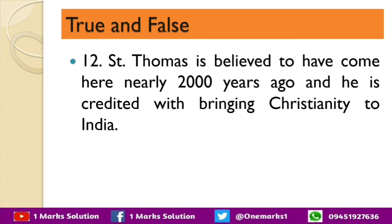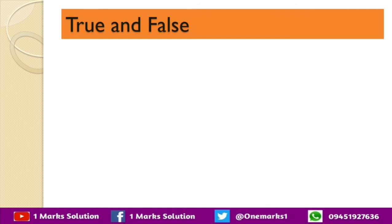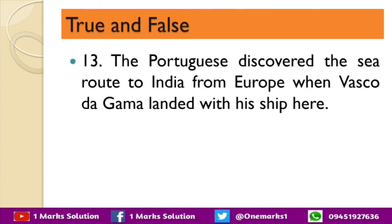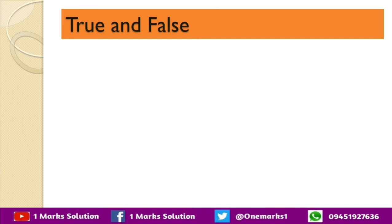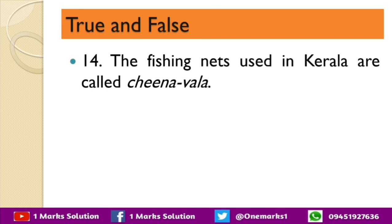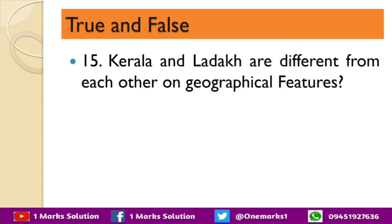Jewish and Arab traders were the first to come to Kerala — True. Saint Thomas is believed to have come here nearly 2000 years ago and is credited with bringing Christianity to India — True. The Portuguese discovered the sea route to India from Europe when Vasco da Gama landed with his ship here — True. The fishing nets used in Kerala are called China Vala — True. The utensils are known as China Chatti, and the fishing nets in Kerala are similar to those used in China, which is why they are called China Vala. Kerala and Ladakh are different from each other in geographical features — True.